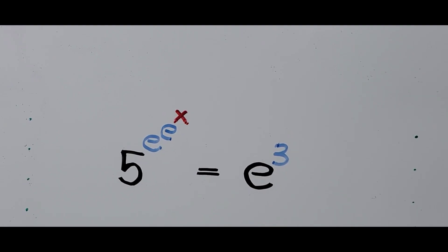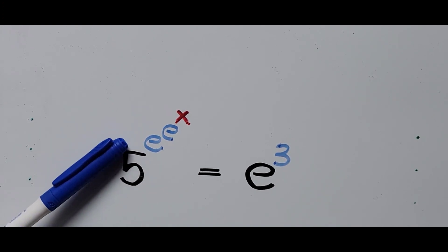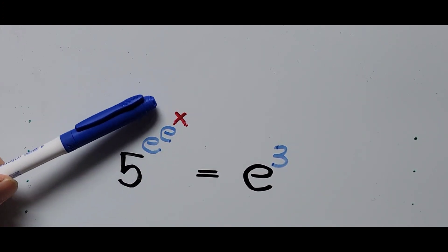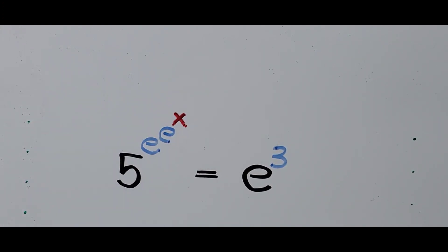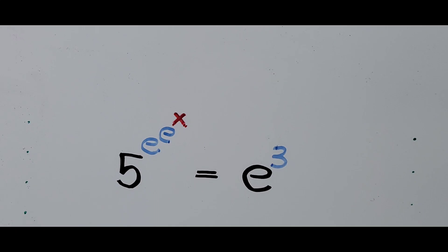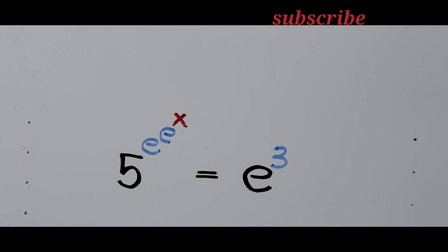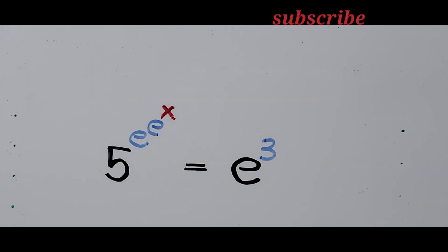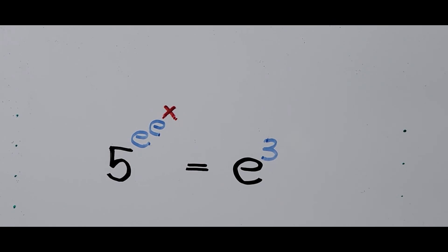Hello everyone, we have an exponential equation: 5 to the power of e to the power of e to the power of x equals e cubed, and we're looking for the value of x. For those new to my channel, thank you — if you can hit the like button and subscribe for more videos, thank you very much. Now let's start solving.